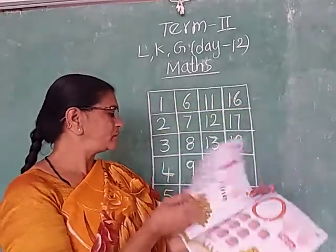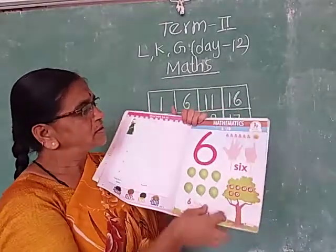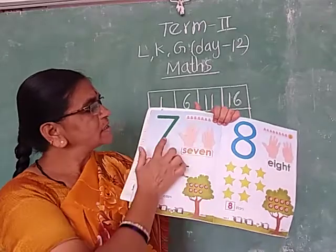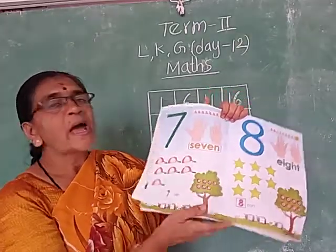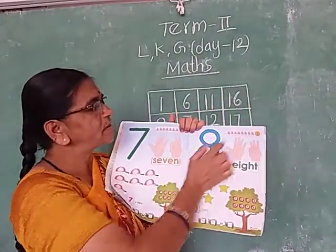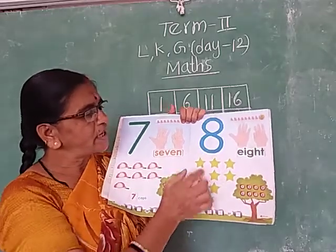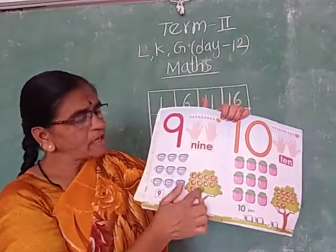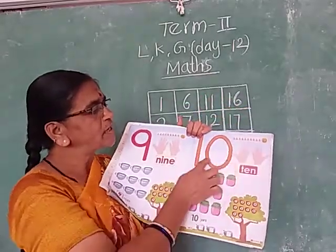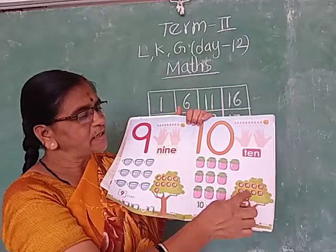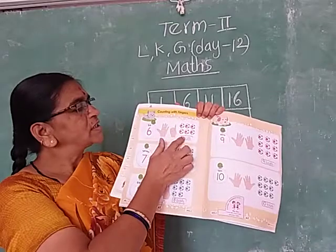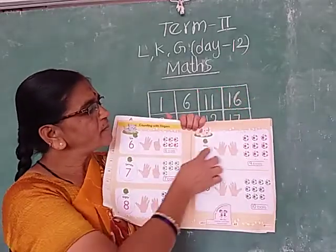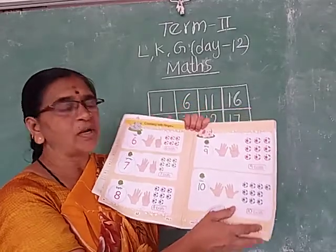Can we see one more time? 6 butterflies, 6 fingers, 6 balloons, 6 apples. 7: 7 butterflies, 7 fingers, 7 caps, 7 apples. Next number 8 — 8 butterflies, 8 fingers, 8 stars, 8 apples. Next number 9 — 9 butterflies, 9 fingers, 9 cups, 9 apples. Next number 10.